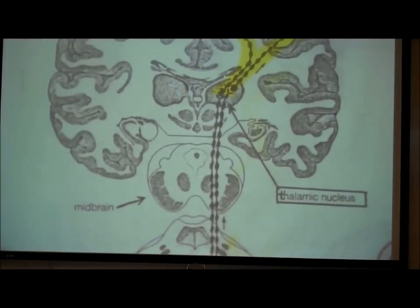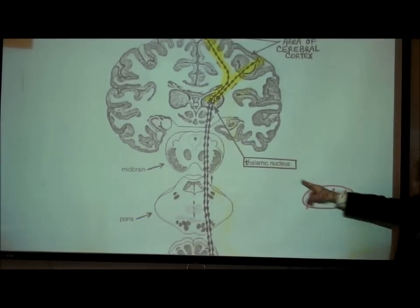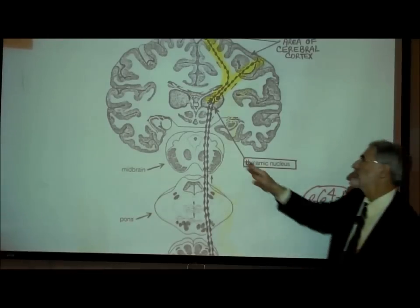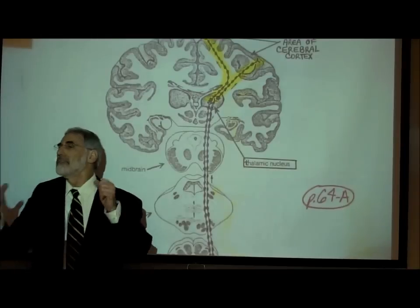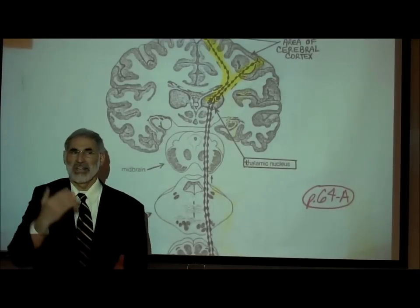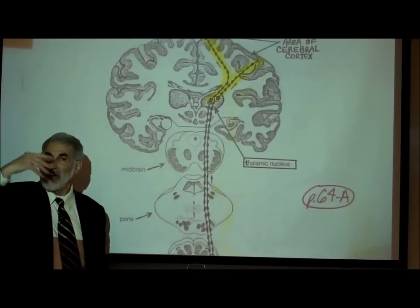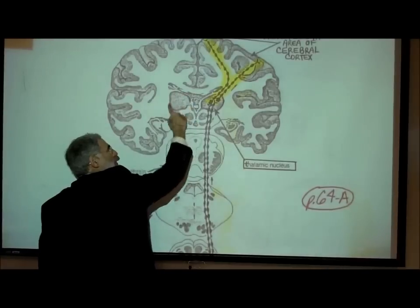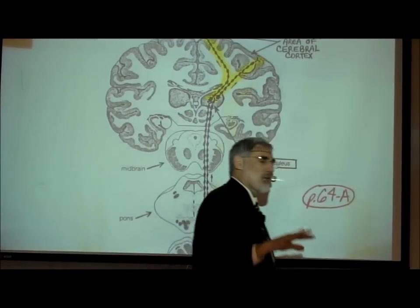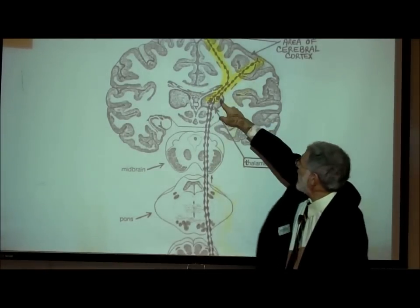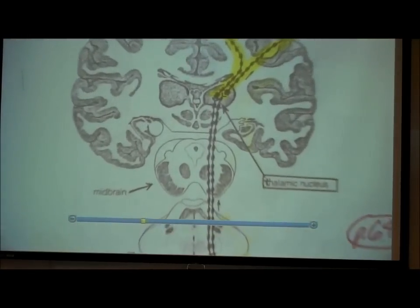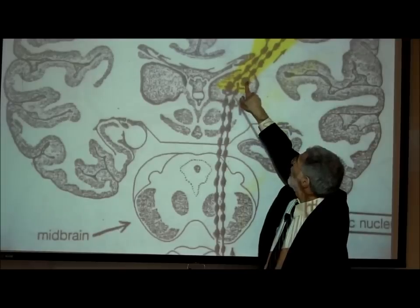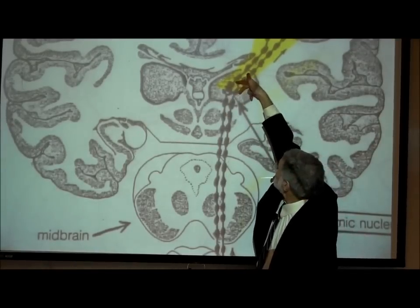These two myelinated nerve fibers are part of a bundle called the spinothalamic tract. It's called spinothalamic because it sends information from the spinal cord up to an area of the brain called the thalamus. This is a cross-section through the brain, and here's the thalamic nucleus or thalamus. Most sensory information is sent to the thalamus before traveling to higher areas like the cerebral cortex. The gray matter in the thalamus results from neuron cell bodies located there.